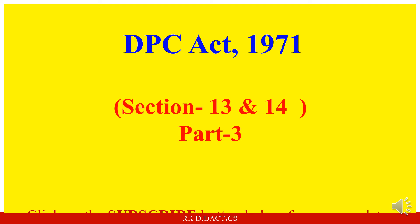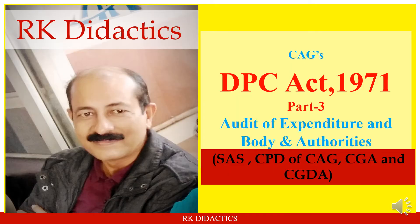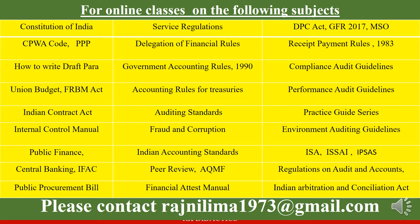Hello friends, let us discuss CAG's DPC Act 1971. This is Part 3, and in this part we shall discuss Sections 13 and 14. Sections 13 and 14 of the DPC Act deal with audit of expenditure and audit of grants or loans provided to bodies and authorities. Please keep in mind that in this video where 'UT' has been written, it will mean union territory having a legislative assembly.